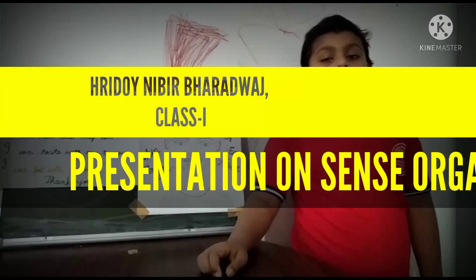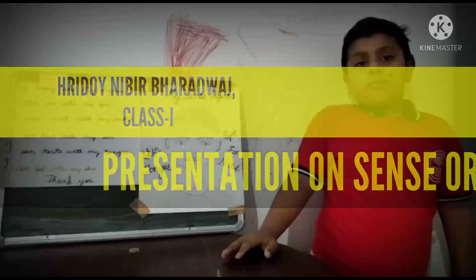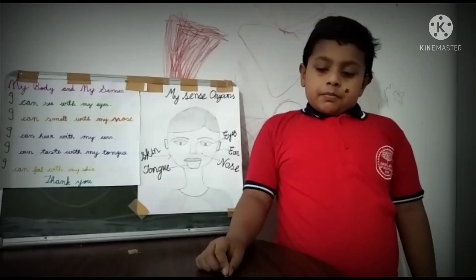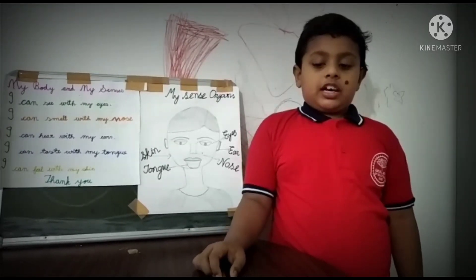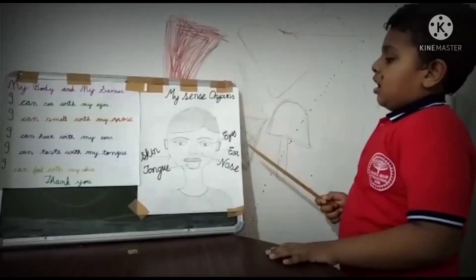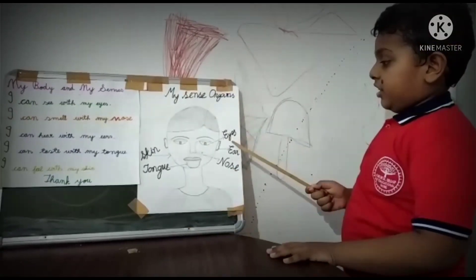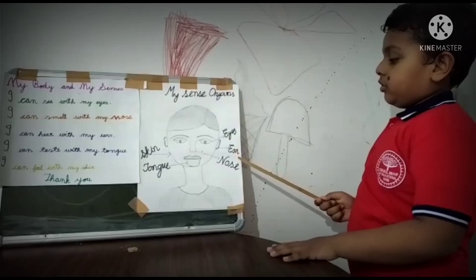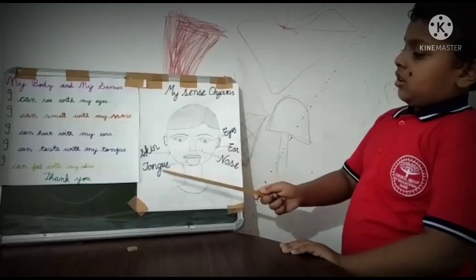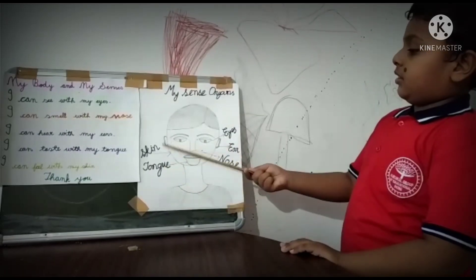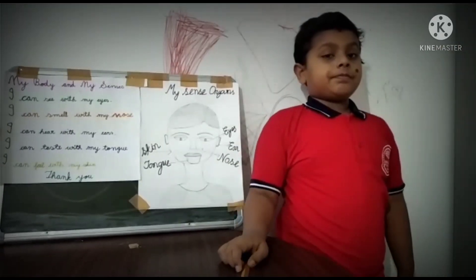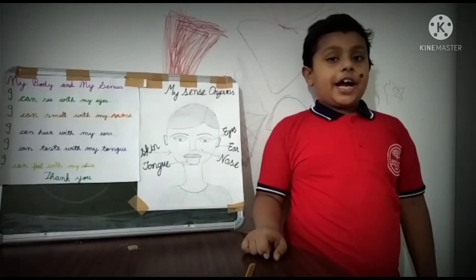We have many organs. We have five sense organs. They are eyes, ears, nose, tongue and skin. I can see with my eyes.